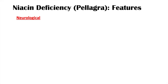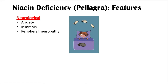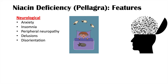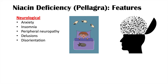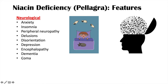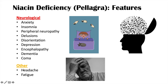There are also neurological findings in pellagra. These include anxiety, insomnia, peripheral neuropathy, delusions (fixed false beliefs), disorientation, depression, encephalopathy (altered mental status), and can progress to dementia — the third D — and ultimately coma and death — the fourth D. Other clinical features include headache and fatigue, which also tie into these neurological findings.